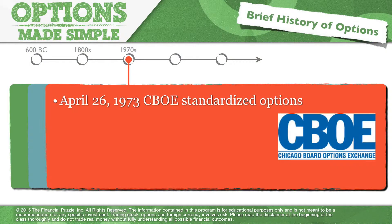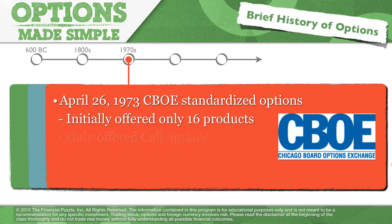Options trading has a somewhat different story. Options trading had been going on for a long time over the counter. It was in the 1930s that the government gave the Chicago Board of Trade permission to standardize the options market, but they didn't really act on it until futures trading hit a slump in the 1970s. The CBOT then created the Chicago Board Options Exchange — the CBOE — in 1973, specifically on April 26th, 1973.